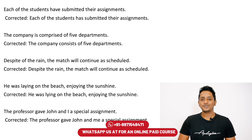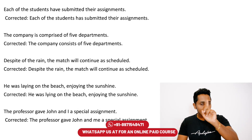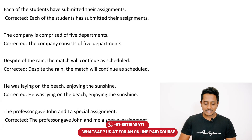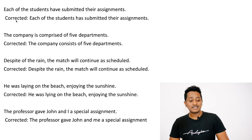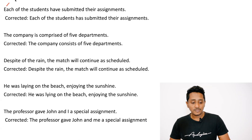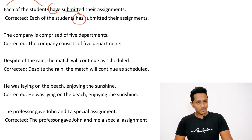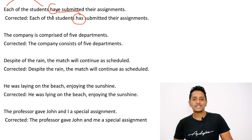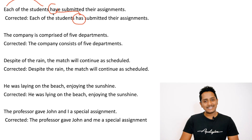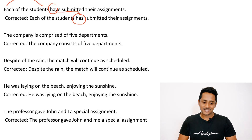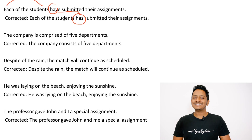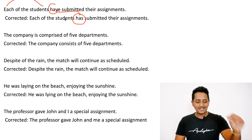Each of the students is — correct answer. Each means everybody, it refers to one. Subject-verb agreement says each represents one person, each represents singular. So 'each of the students have' is wrong — it has to be 'has'. A lot of people don't know this. Each of the students is happy. It's not 'each are' or 'each have' — it's 'each has', just like 'he has'.